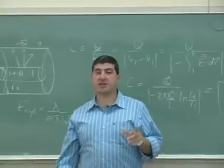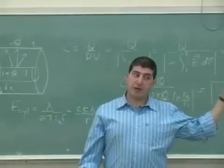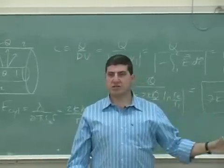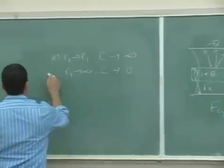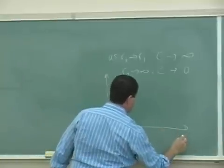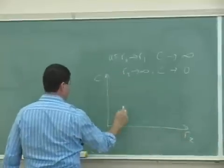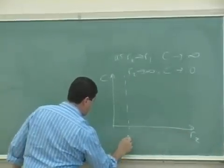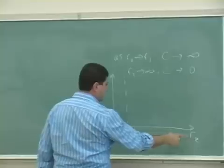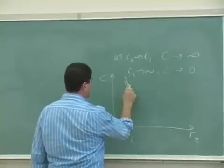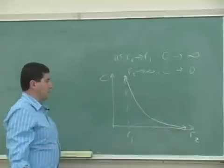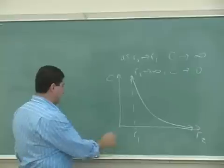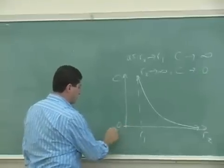The cylindrical capacitor is similar to the parallel plate in that it doesn't retain its electric field. So its graph would look like this: as R2 approaches R1, capacitance reaches infinity, then as R2 goes to infinity, the capacitance reaches zero.